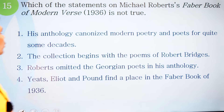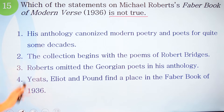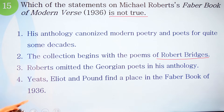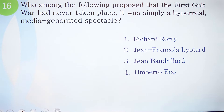Question fifteen: Which statement on Michael Roberts' 'Faber Book of Modern Verse' (1936) is not true? Statement one: His anthology canonized modern poetry and poets for quite some decades. Statement two: The collection begins with the poems of Robert Bridges. Statement three: Roberts omitted the Georgian poets in his anthology. Statement four: Eliot and Pound find a place in the Faber Book of 1936. The statement which is not true is number two — the collection does not begin with Robert Bridges.